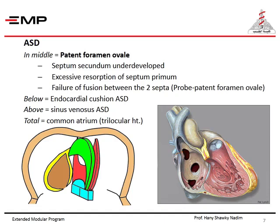The last type is total non-formation of the septum primum and septum secundum. In such a case, this heart is called a trilocular bi-ventricular heart, or common atrium.